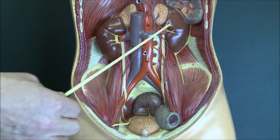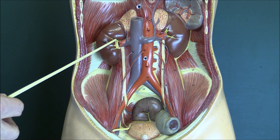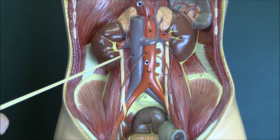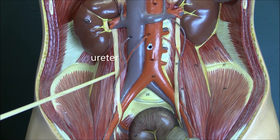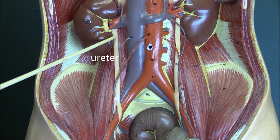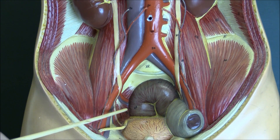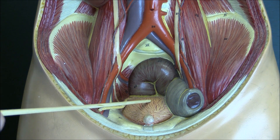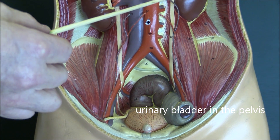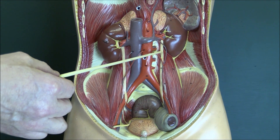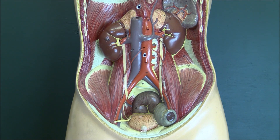The kidneys' function is to filter blood and produce urine. The urine is produced in the kidneys, and taking the right kidney as an example, once produced it goes down the right ureter. The wall of the ureter is muscular with peristaltic activity to transport urine from the kidney down. The ureters go in behind the bladder, draining into the urinary bladder in the pelvis. The same applies on the left side — urine produced in the kidney goes down the ureter into the back of the bladder prior to voiding via the urethra.